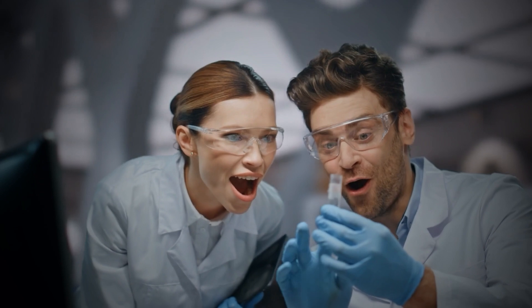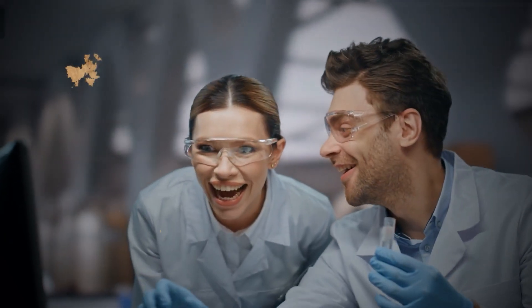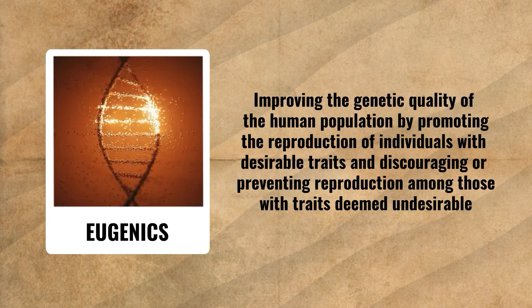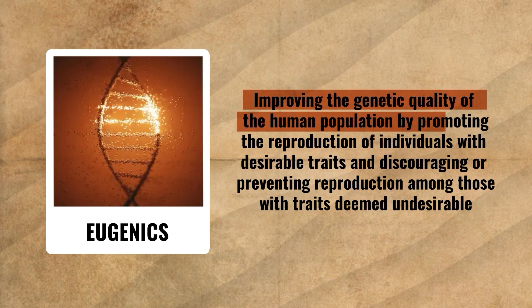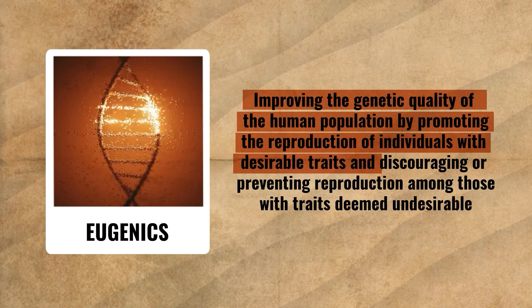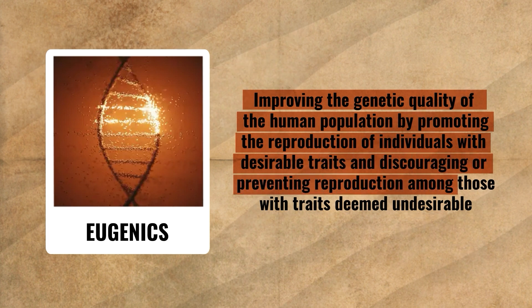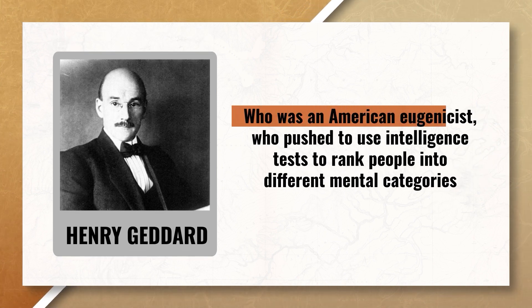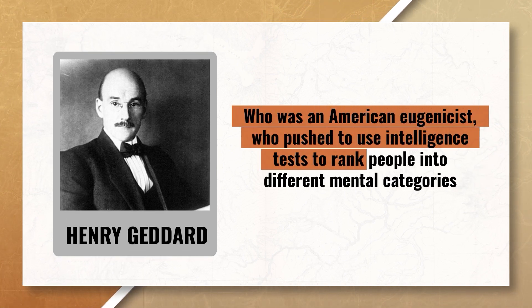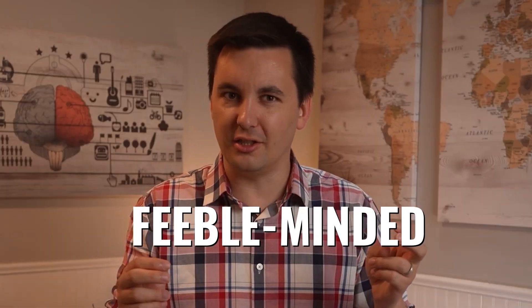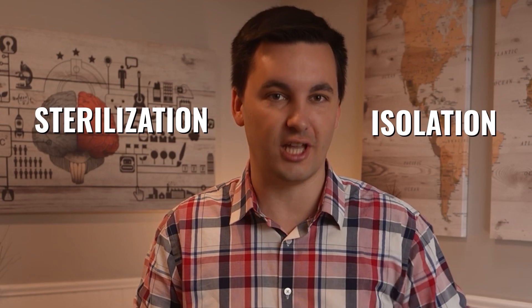Unfortunately, some individuals and groups have taken the evolutionary perspective and tried to apply it in ways that discriminate against others — such as eugenics, which is the belief in improving the genetic quality of the human population by promoting reproduction of individuals with desirable traits and discouraging or preventing reproduction among those with traits deemed undesirable. We already talked about this in Unit Zero when we discussed Henry Goddard, an American eugenicist who pushed to use intelligence tests to rank people into mental categories and argued that society should prevent people found to be feeble-minded from having children, either through sterilization or isolation.